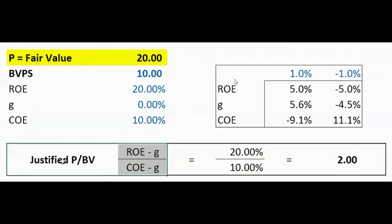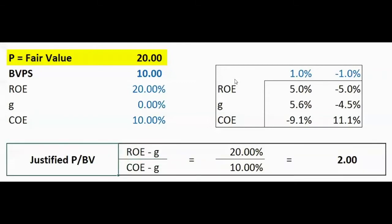The formula we derived in a previous episode is: justified price-to-book equals ROE minus G, divided by cost of equity minus G. This gives you the justified price-to-book value multiple. You then multiply that by the book value of the bank to come up with the valuation.